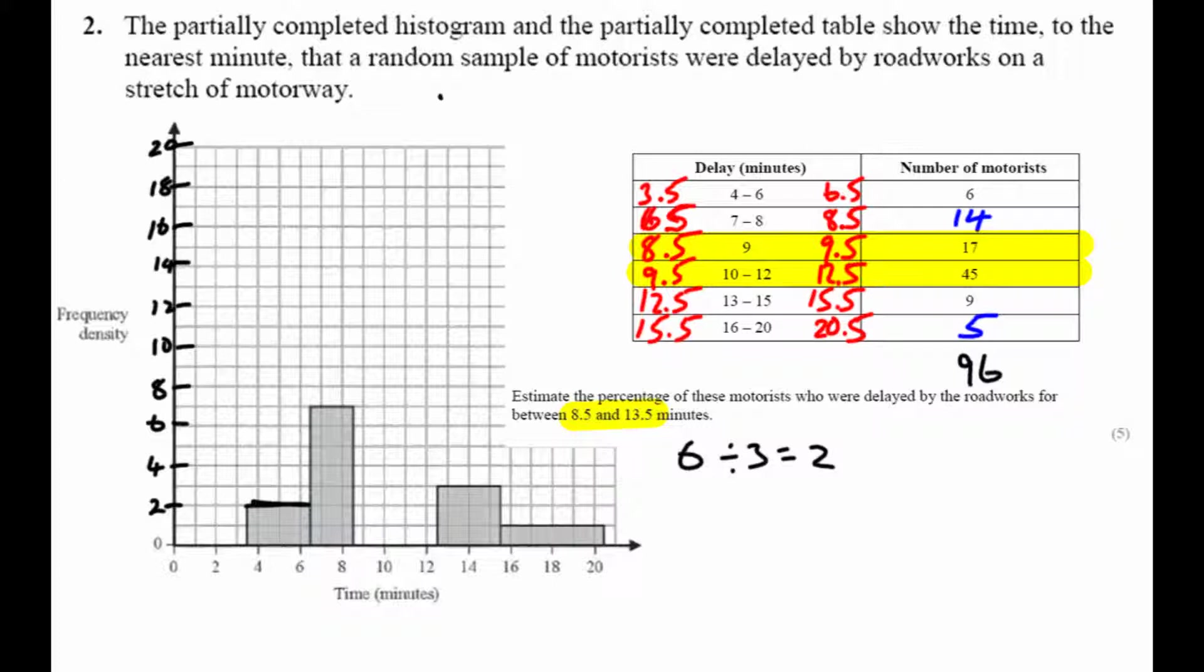Well, since I want to know up to 13.5, I'm just going to quickly add that to the diagram. There's my 13.5. What fraction of the whole bar is this shaded part? Well, the width of this shaded part is 1, whereas the width of the entire bar was 3. So this is actually one third of that bar. So I'm going to need to find 17 plus 45 plus a third of that 9.